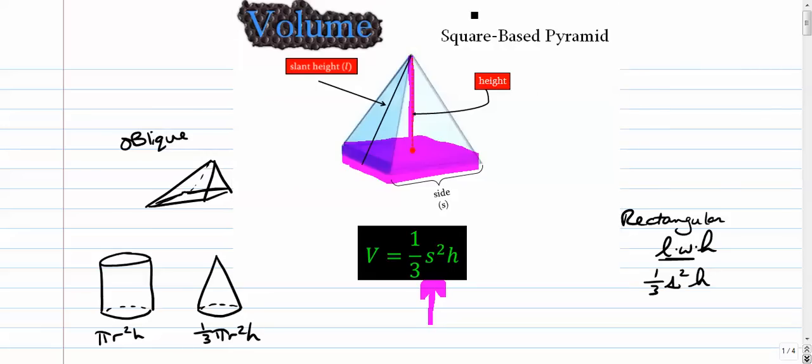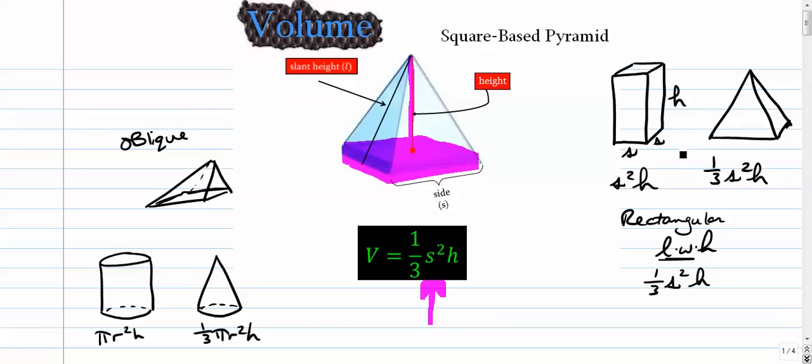Similarly, if we have a rectangular prism standing up like this, where the length and the width are the same, so this is s and s, and this is h, well, that volume would be s times s times h. Well, a pyramid, a square base pyramid, is s times s times h divided by 3. That's kind of a nice little connection there. But anyway, let's go on to a couple examples here.